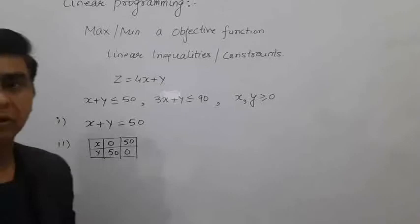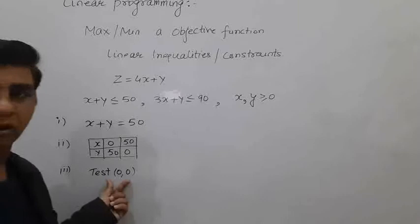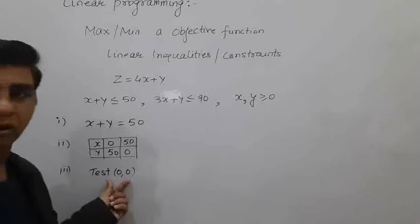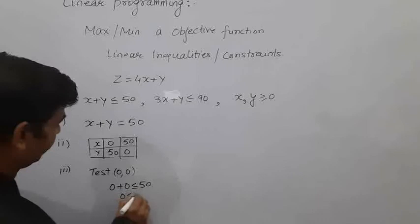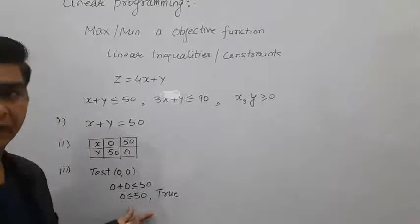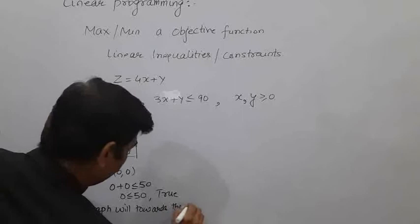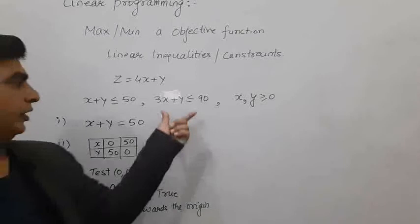The third step is to do an origin test. Put x = 0 and y = 0 in the given inequality: 0 + 0 ≤ 50 gives 0 ≤ 50, which is absolutely true. If the test is true, then the graph shading will be towards the origin.